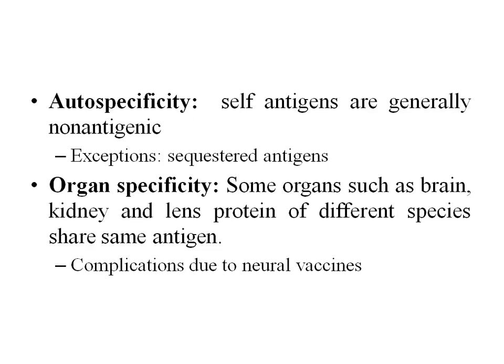Some organs such as brain, kidney, and lens contain hidden or sequestered antigens. Different species can share the same antigen — for example, the early neural vaccines derived from sheep brain given for rabies: antibodies produced against sheep brain proteins cross-reacted with antigens of human brain, leading to encephalitis.